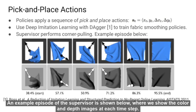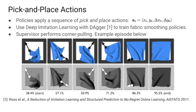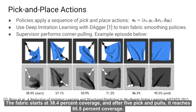An example episode of the supervisor is shown below where we show the color and depth images at each time step. The fabric starts at 38.4% coverage and after 5 pick and pull actions it reaches 95.5% coverage.